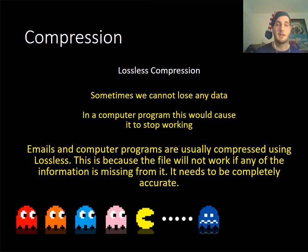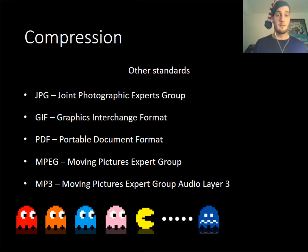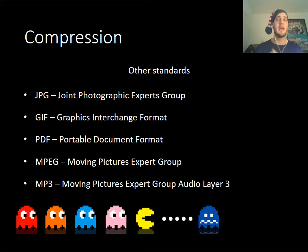Lossy compression tends to be used for images and sound, whereas lossless tends to be used for computer programs or text documents where you can't afford to lose any key information — such as email or program files, where you don't want anything that would stop the program working. Some file types you need to know: JPEG and GIF are image types; PDF is used for business documents; MPEG is for moving pictures — essentially a movie; and MP3 is for sound. A lot of people mix up MPEG and MP3 in exam papers, so be careful.